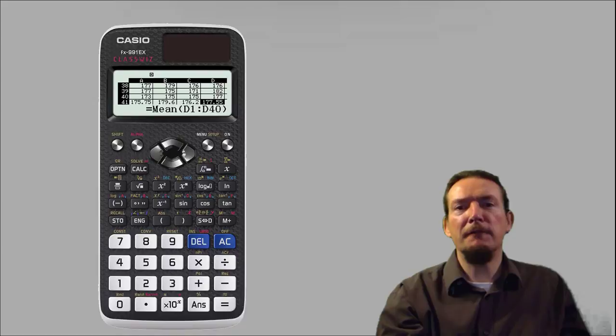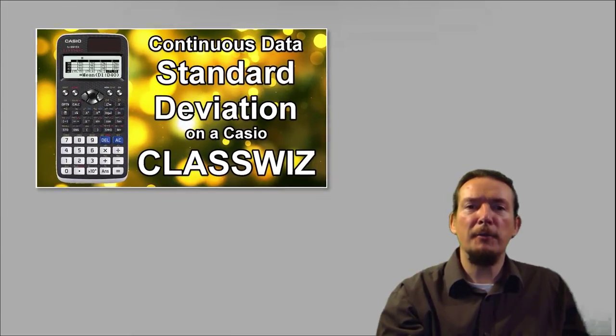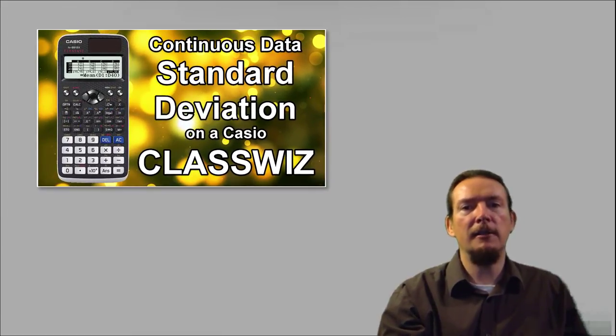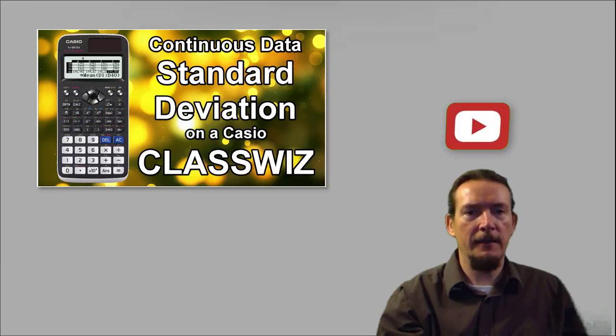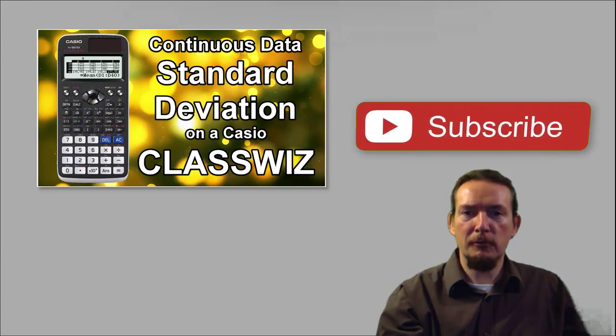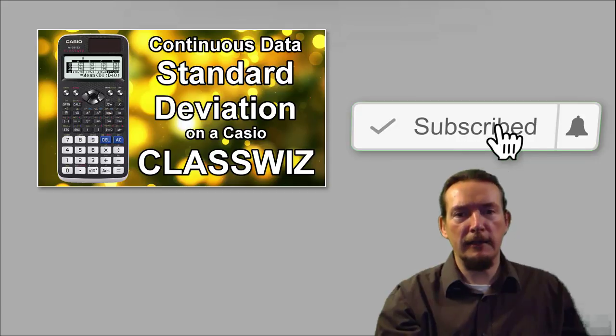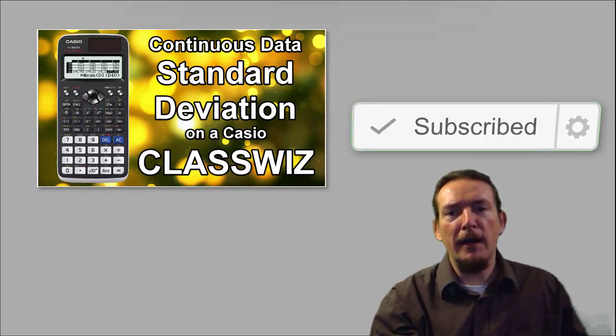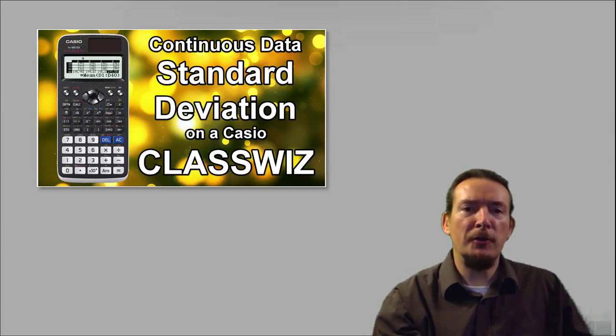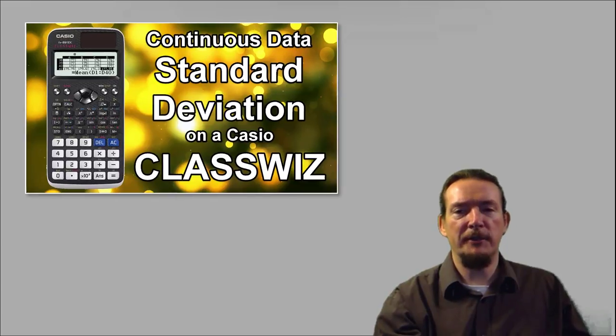We will be using this to find mean and standard deviation from a group frequency table containing continuous data. So if you own this calculator or are thinking of getting one, why not subscribe and click the bell to be notified about new uploads showing you how to get the most out of your ClassWiz.